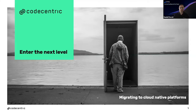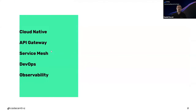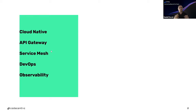Welcome to my talk about entering the next level: migrating to cloud native platforms. When we think about cloud native platforms, we think about architecture — API gateways, service meshes — and we think about the people in the project regarding cloud native migrations, and afterwards we always think about observability and everything behind that. In this talk we will cover the different things around cloud native environments.